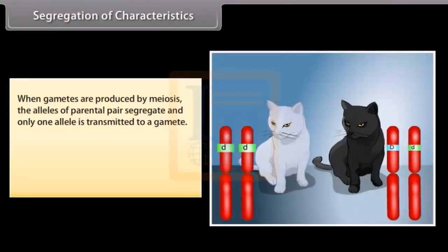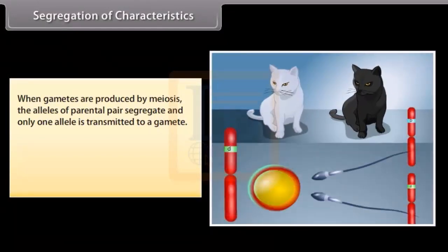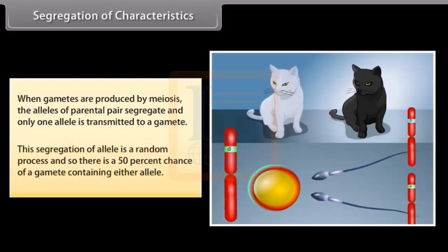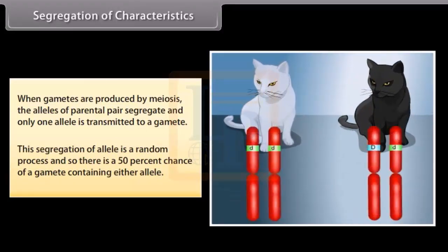Segregation of characteristics. When gametes are produced by meiosis, the alleles of parental pair segregate and only one allele is transmitted to a gamete. This segregation of alleles is a random process and so there is a 50% chance of a gamete containing either allele.